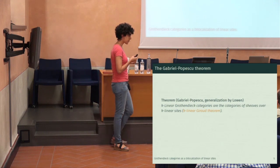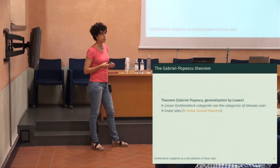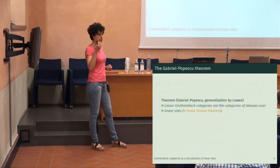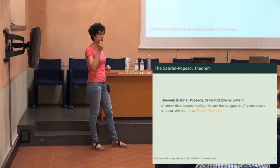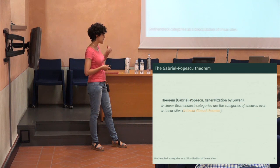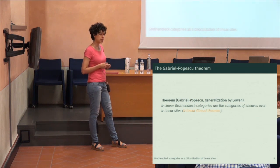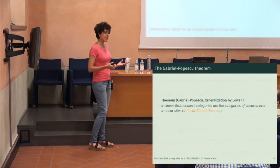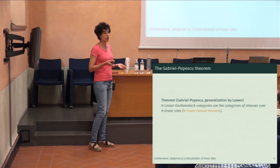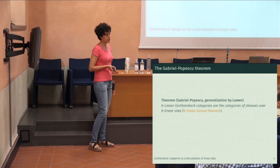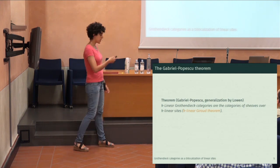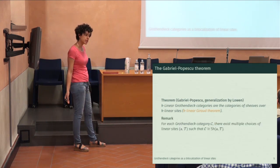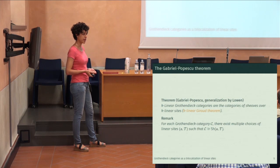For Grothendieck categories, the relation with these objects is given by the classical Gabriel-Popescu theorem, which says every Grothendieck category is a localization of a module category — you just take the ring to be the endomorphisms of the generator. This can be generalized and expressed in terms of linear sites. This generalization was done by Lowen, and it gives a k-linear version of Giraud's theorem: every Grothendieck category is a category of sheaves over a linear site, and vice versa. As in the classical theory, we have many representations, which is the power of the theory.